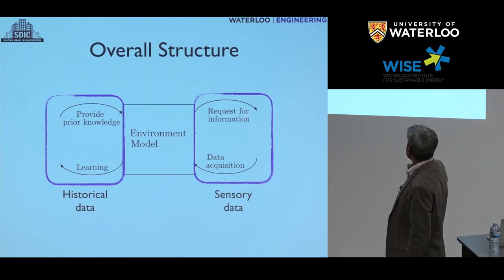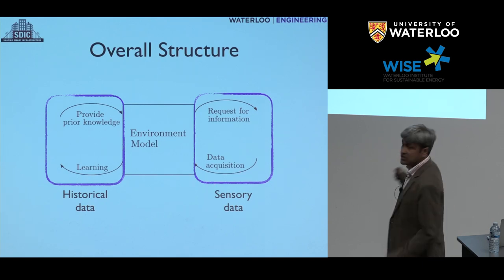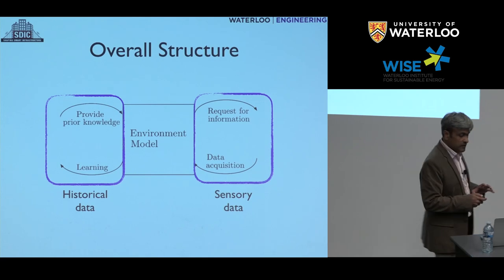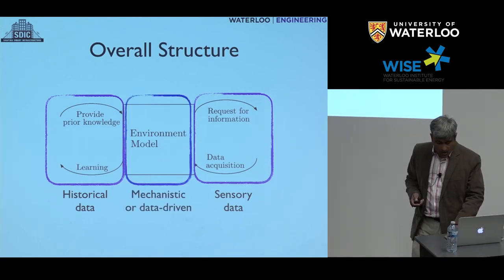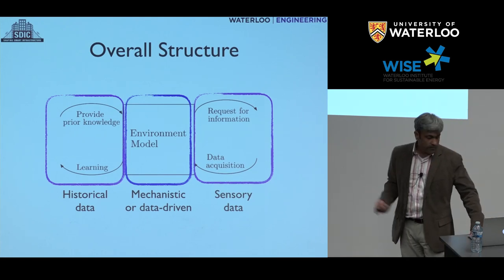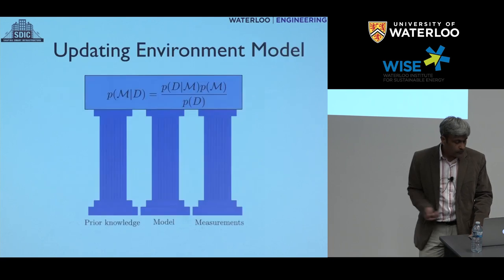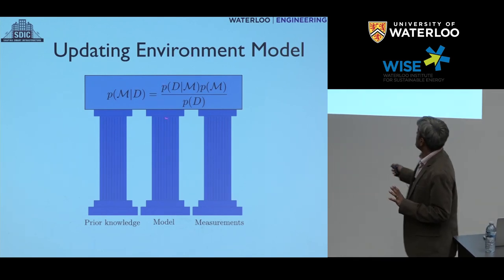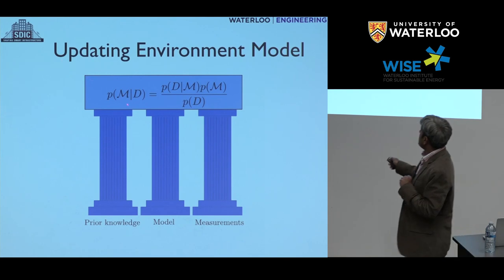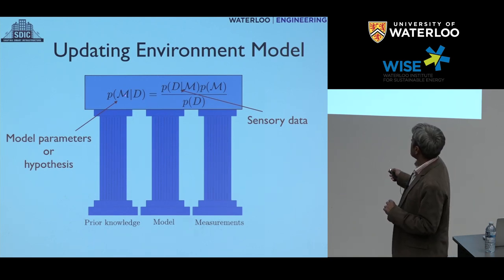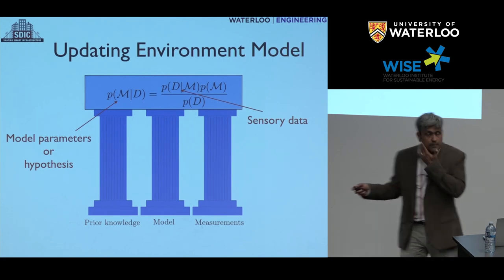The priors encapsulate what prior knowledge you have in your system. This is very important in infrastructure because a lot of times you would go to a piece of machinery and a technician would say, 'I think that sound is something wrong with the bearing inside.' That qualitative information can be captured in this prior knowledge framework. The other important component is the sensory data. When the environment model requests information, that information is gathered from your physical system through data acquisition, put back into the environment model, and massaged in a way that allows you to do a number of things.